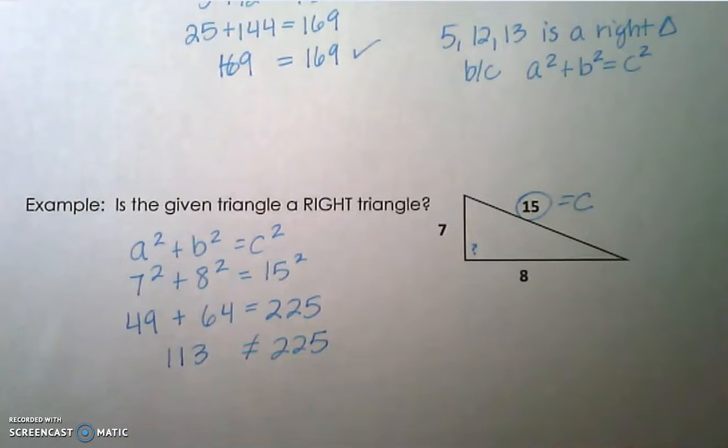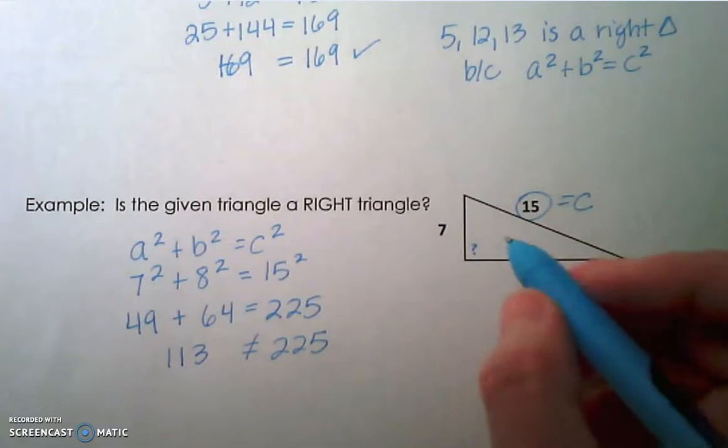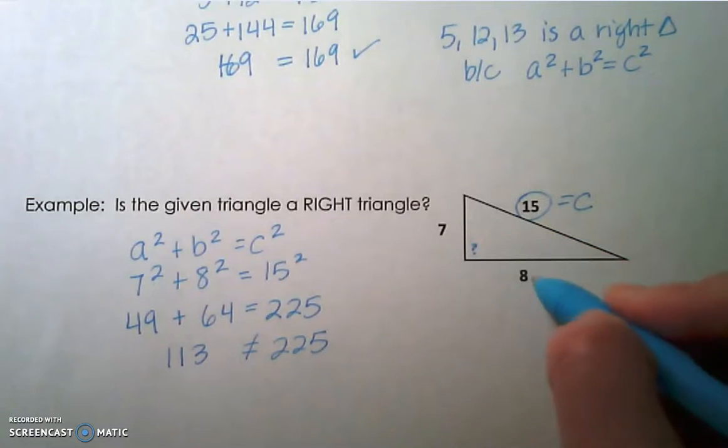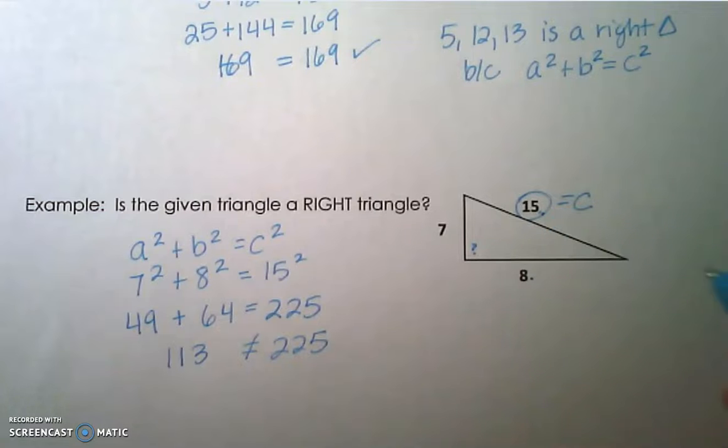So does this equal a right triangle? It actually does not even equal a triangle because the sum of the two smaller sides has to be greater than the third side. This wouldn't even make a triangle based on the triangle inequality theorem, but we're not testing that right now. We're just trying to see if this would be a right triangle. So this is not a right triangle.